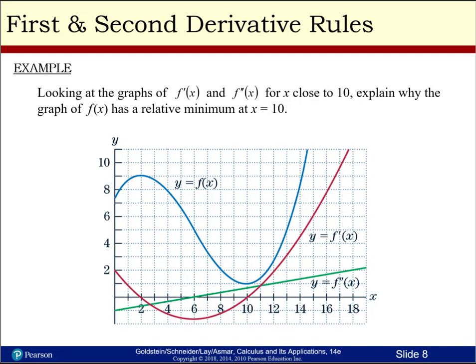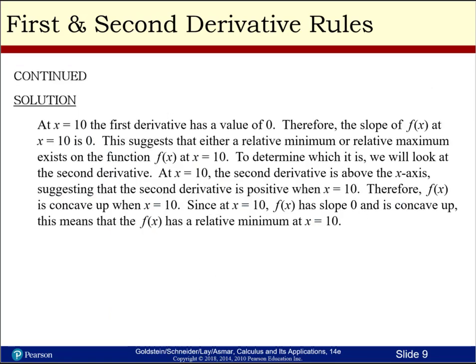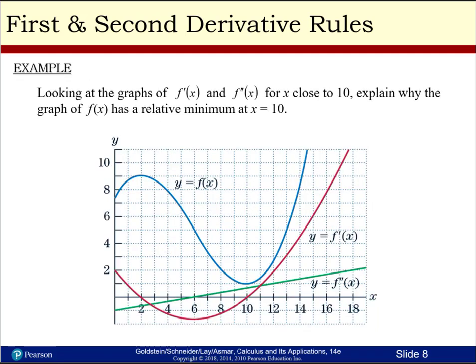In another example we look at three curves and consider how each is changing — whether it's increasing, decreasing, or something else. Reading the graphs from left to right: the blue curve is increasing, then decreasing, then increasing again. The red curve is decreasing then increasing. The green is a straight line with increasing slope. For x close to 10, f of x is the blue line, the red line is the first derivative, and the green line is the second derivative.